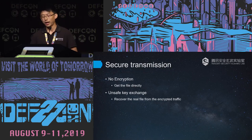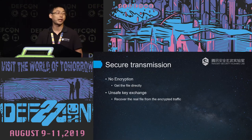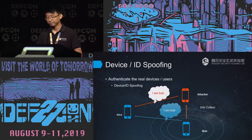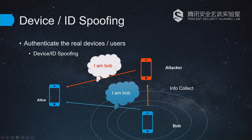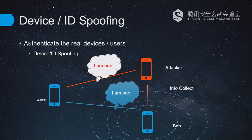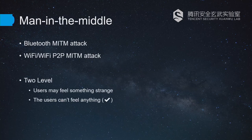When files are transferring there may be no encryption at all, so we can get the file directly. Sometimes the key exchange is not safe, so attackers can recover all the real files from the encrypted traffic. Next, device and ID spoofing: many apps fail to authenticate the real device or users. For example, when Alice wants to send Bob a file, the attacker can collect Bob's advertised information and advertise themselves as a fake Bob. Based on device spoofing, attackers may accomplish a man-in-the-middle attack so the normal user will feel nothing.